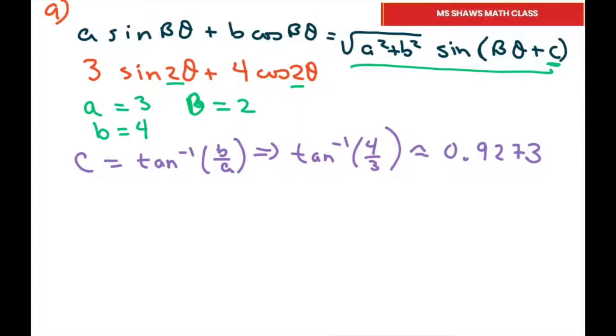All right, now we can fill everything in. So we have 3 sine of 2 theta plus 4 cosine of 2 theta equals square root of our a squared and b squared. So we have 3 squared plus 4 squared. That's just going to be 5.